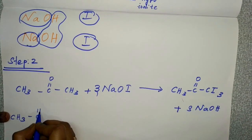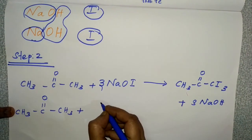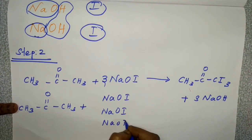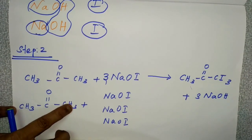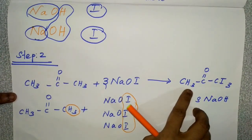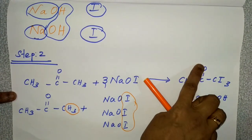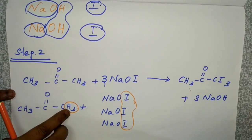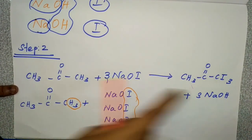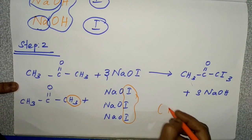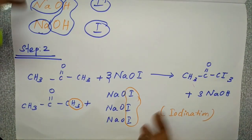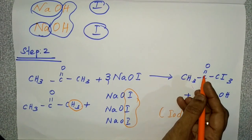CH3-C(=O)-CH3 plus 3 NaOI (sodium hypoiodide). What happens here? The 3 hydrogens from CH3 are replaced by 3 iodine atoms. The hydrogen combines with NaO to form 3 NaOH. This step is iodination — addition of iodine — and the product formed is triiodoacetone.